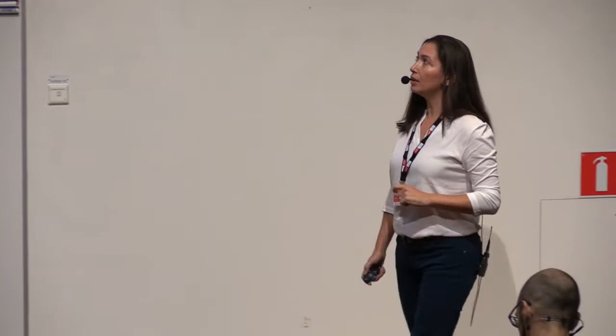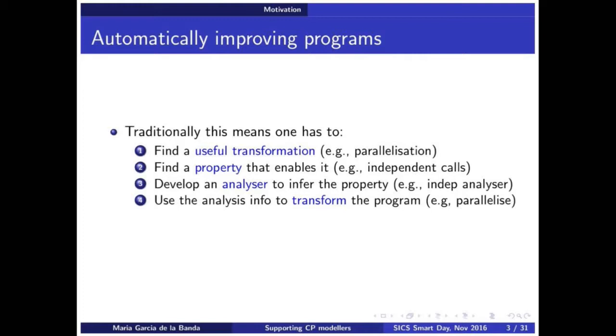Now, this needs lots and lots of expertise, usually one or more PhDs. And our aim, the aim of our team, is to support modelers in finding good models as soon as possible. Now, how does this usually work in general in programming languages? By automatically providing tools that improve the program. In general, the typical thing is you find a useful transformation, then you find a property that enables that transformation. Then you develop an analyzer that infers that property, and then you use that to transform the program.